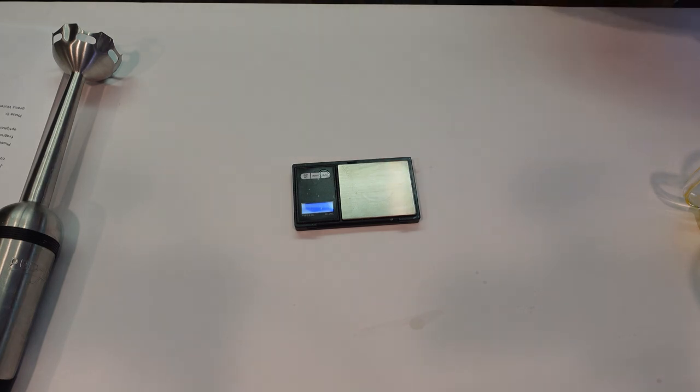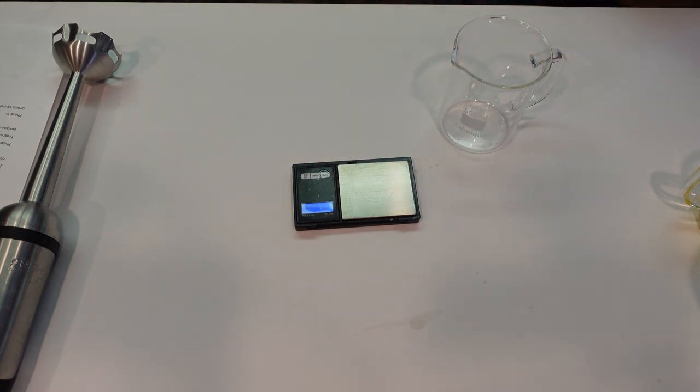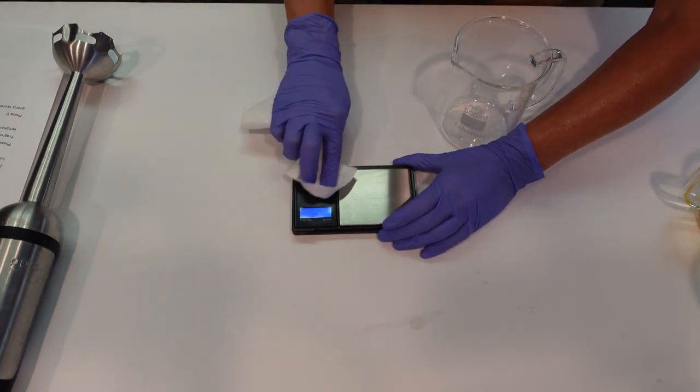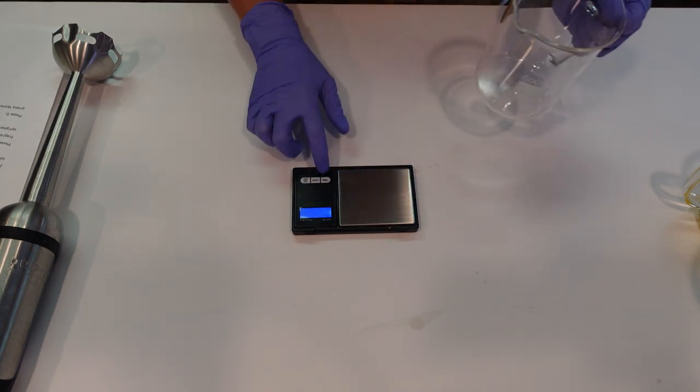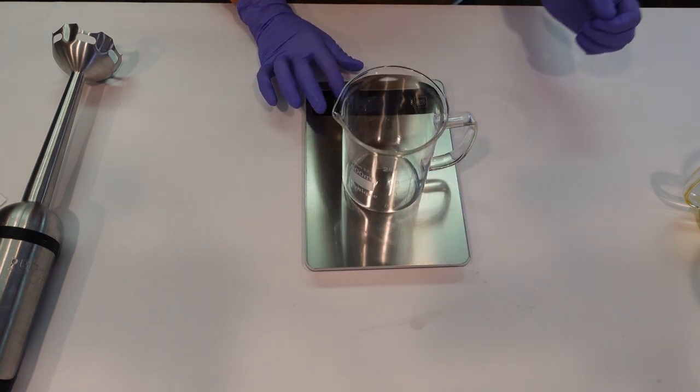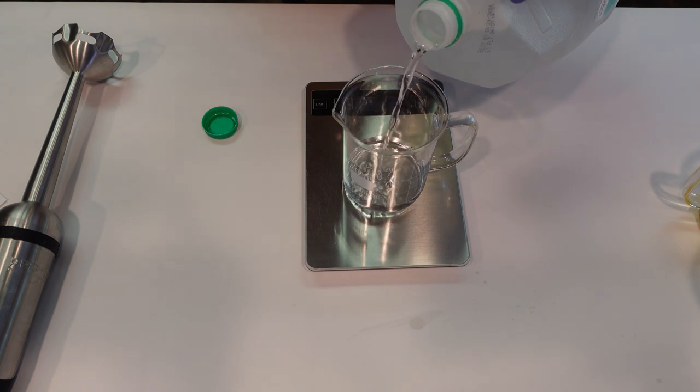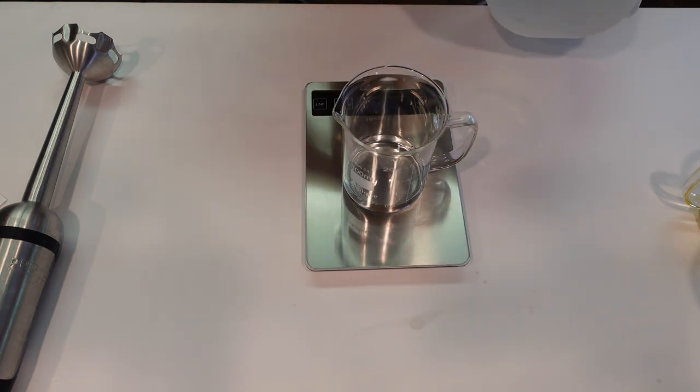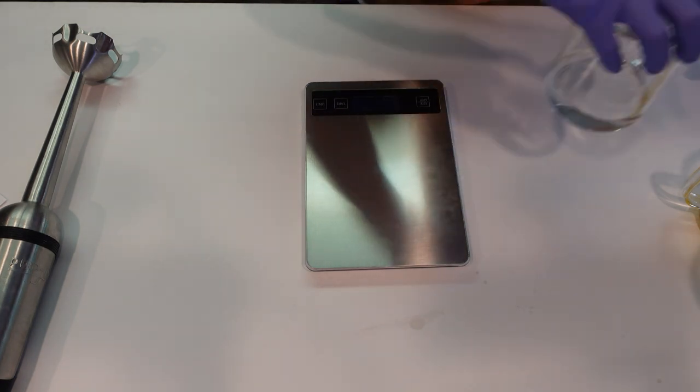Next I'm going to weigh off my Phase D ingredient, I should say. It is just some distilled water. I'm going to put that onto my larger scale here. Perfect. And then I'm going to go ahead and set aside my Phase D water.